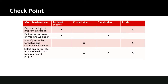The third module objective is to 'identify examples of formative and summative evaluation.' There might be a perceived gap where no instructional materials exist, so we might create our own video. However, looking across the table, we did find an article that's supportive and aligns with it. Lastly, to 'select an appropriate model of evaluation for a real-world program,' we have three items: a created video, a found video, and a journal article. If you find no materials for a specific objective, it's time to create your own content.